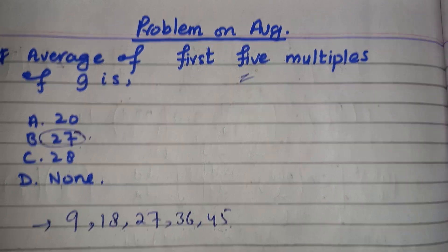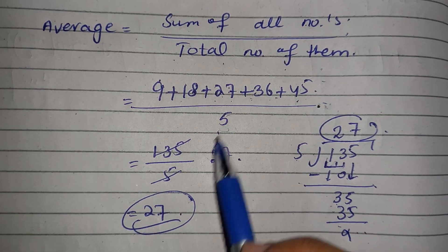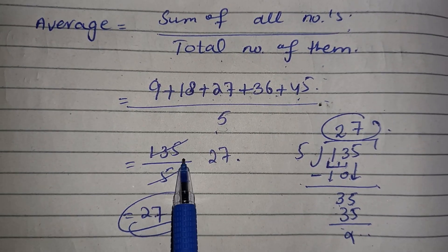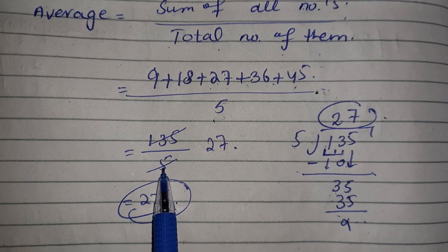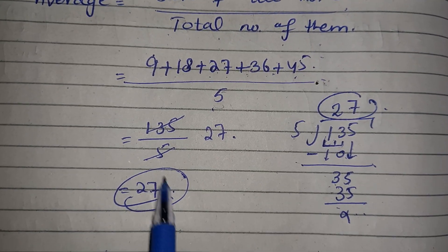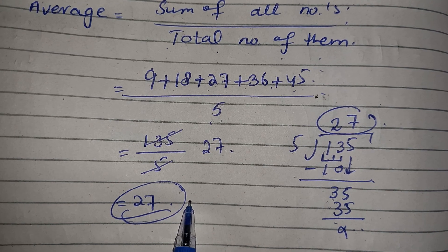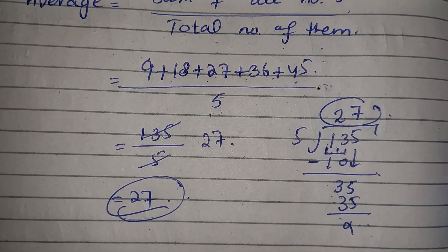So students, if you add all of them, then you will get 135. That is divided by 5, and after dividing it by 5 you will get 27, and this is your required answer. Thank you so much.